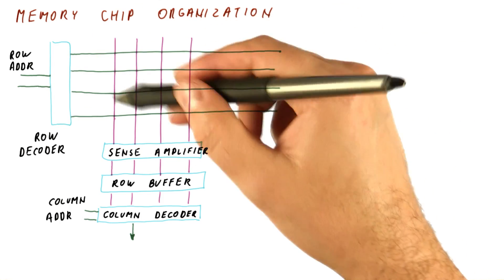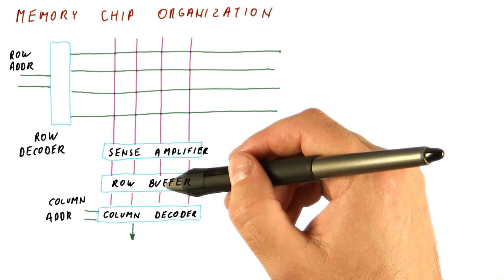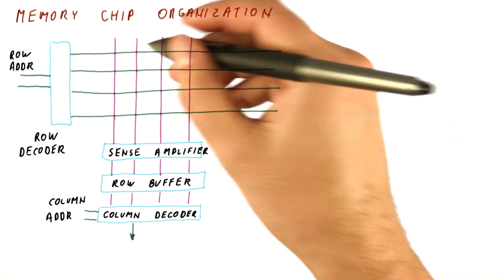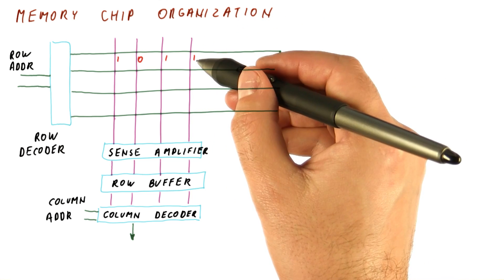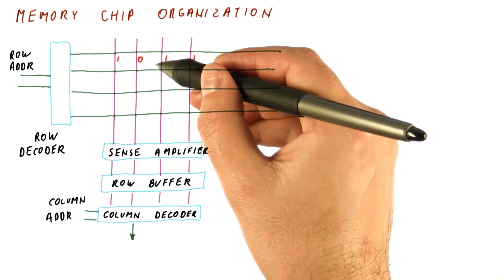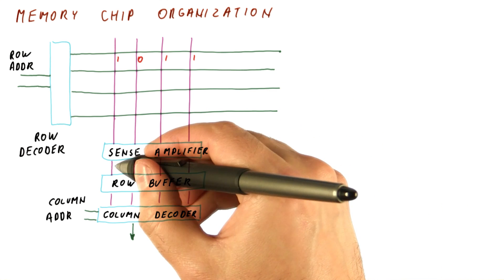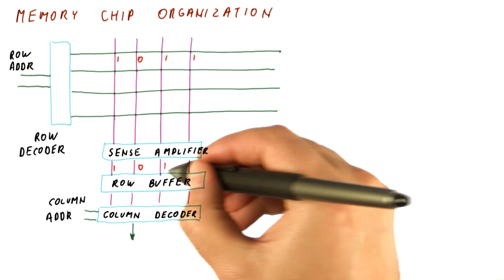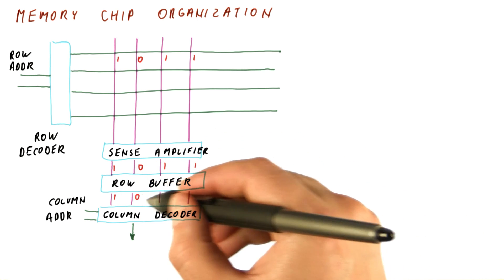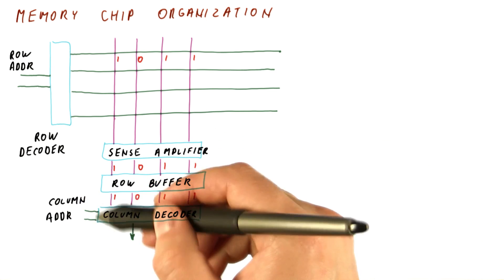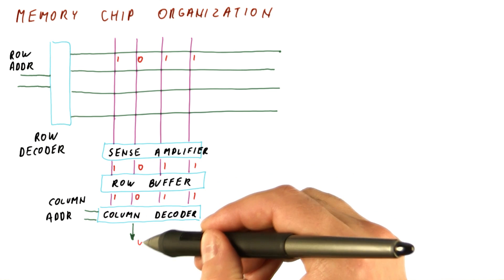We just described how to read a row into the sense amplifier and the row buffer, and then get one bit out of that row. Suppose the bits we had here were 1011. In DRAM, these bits drain into the bit line. The sense amplifier amplifies them and outputs 1011. The row buffer now stores this value and starts outputting it. The column address selects a specific bit to be output, so we output A0.